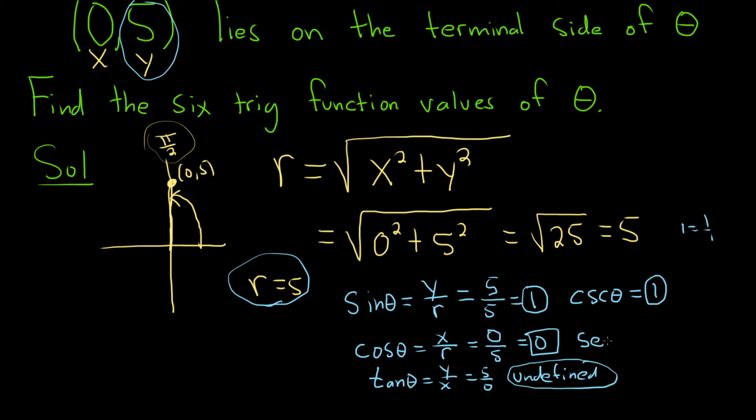But the reciprocal of cosine is the secant function. So we're basically taking 0 over 5 and flipping it. So that would give us 5 over 0, which is no good, so that's undefined. So the reciprocal of cosine is secant, and flipping it would give us something that is undefined.